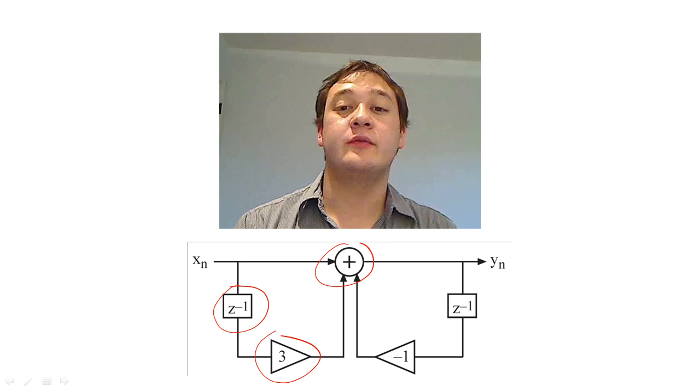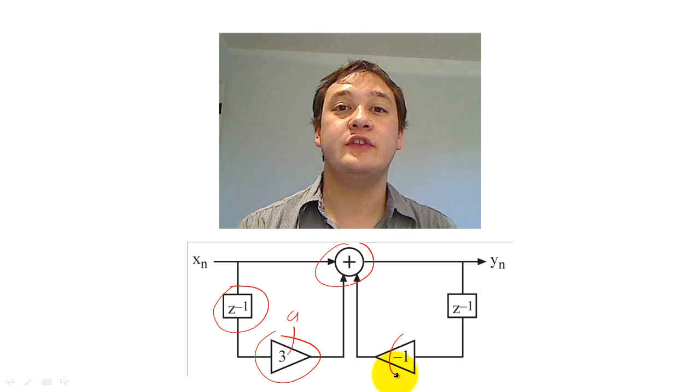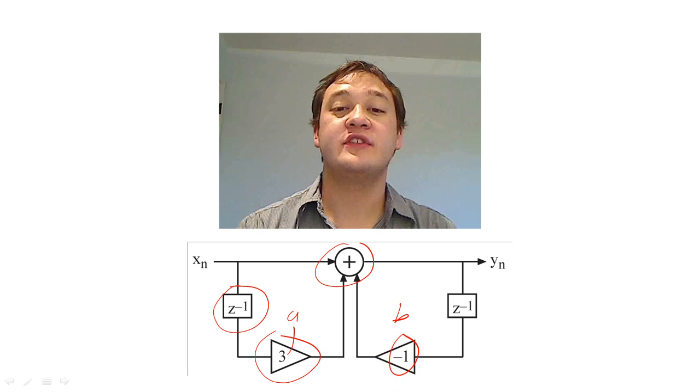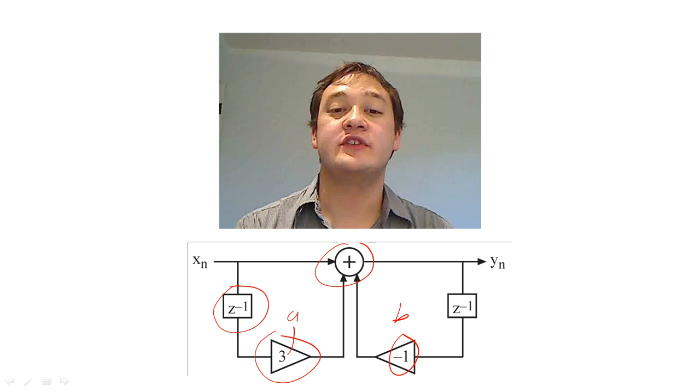All filters that take this form will not necessarily be useful filters. The filter coefficients, the a's and b's, can cause y of n to grow without bound or act sporadically. To begin our discussion of digital filters, we need to discuss the Z-Transform.